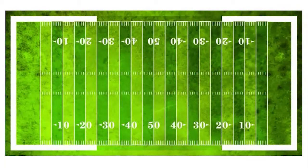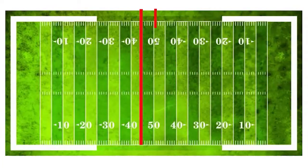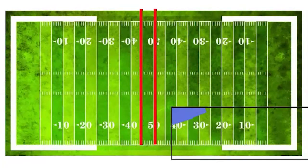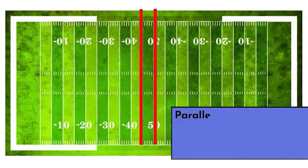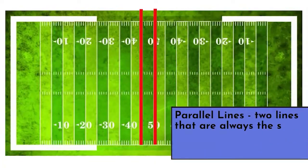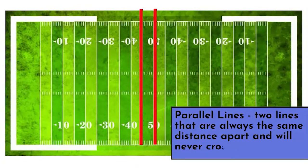That isn't all that is here on the football field. Look at the yard lines marking the distance on the field — these line segments will never cross paths. These lines are parallel. Parallel lines are two lines that are always the same distance apart and will never cross paths.